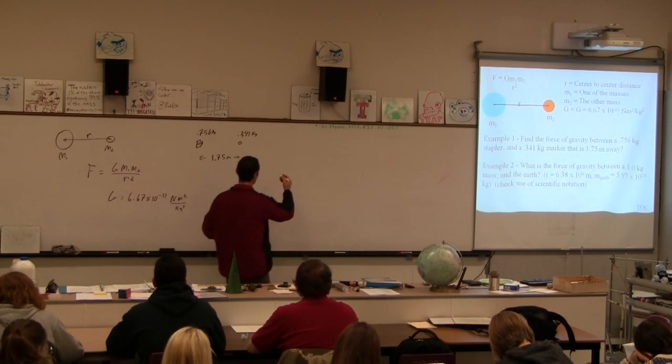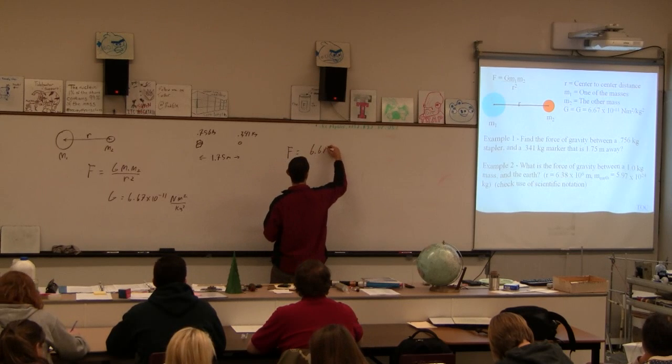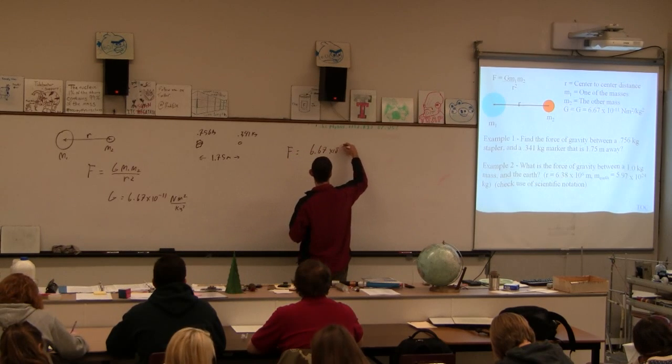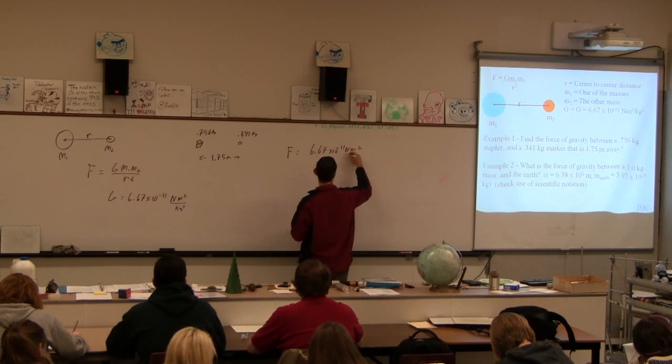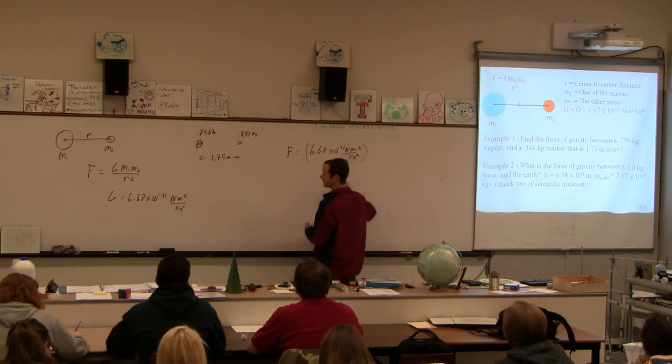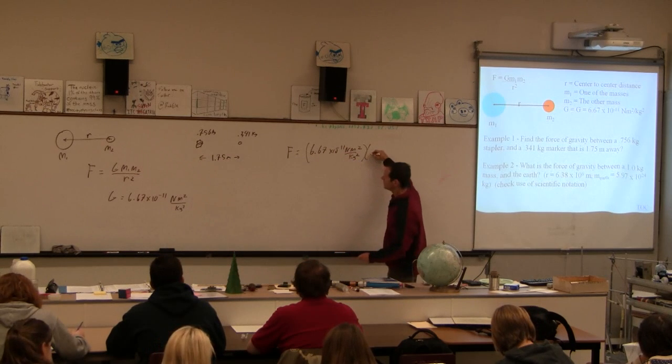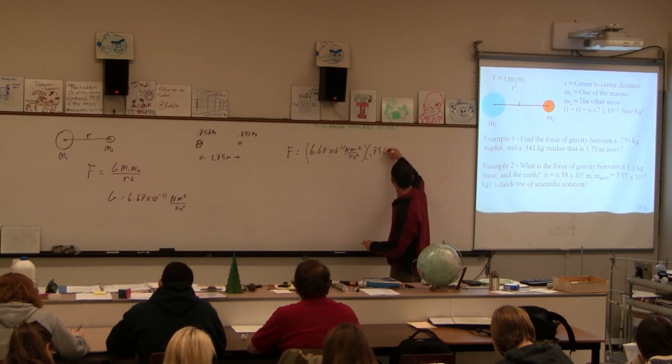And then we're just going to plug into this formula, try this. The force equals 6.67 times 10 to the minus 11th Newton meters squared over kilograms squared. So that's our G. The first mass is .756 kilograms.